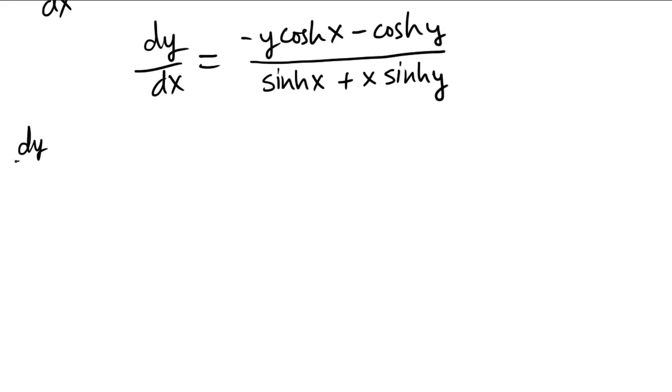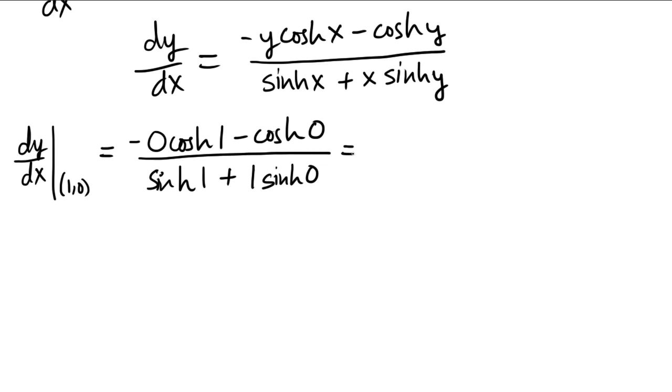So let's see what happens. I'll use this notation where I write a line. So dy/dx, when I put in the point (1,0), that gives me minus 0 times cosh(1) minus cosh(0). So I'm replacing my y by 0 and the x by 1. Over sinh(1) plus 1 times sinh(0). So what happens here? Well, 0 times this is just 0. And so the only thing that survives on the top is hyperbolic cosine of 0. Sinh(1) is going to survive. And sinh(0) is actually equal to 0. And 1 times 0 is 0. So that just goes away. So this is what we have.